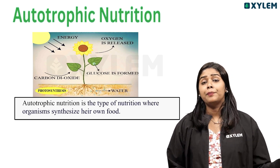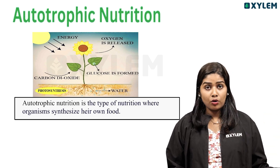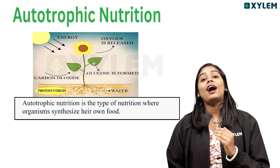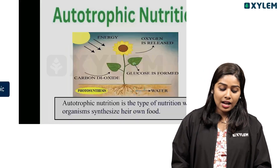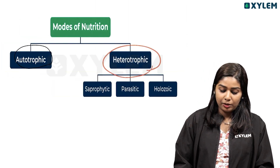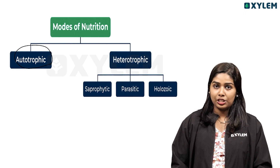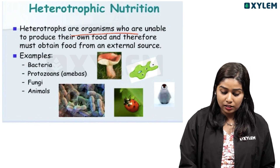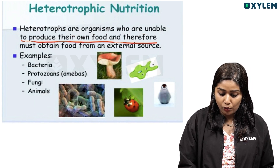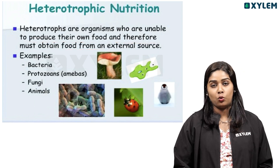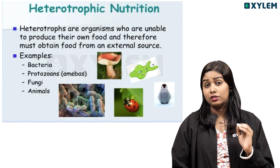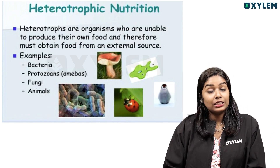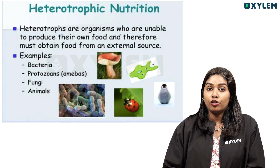There are certain types of organisms, and also certain types of plants, which are dependent on other organisms or other plants for their nutrition. What do you mean by heterotrophic nutrition? Heterotrophs are organisms who are unable to produce their own food and therefore must obtain food from an external source. They depend on other organisms — we human beings are examples of heterotrophic organisms. There are also some plants that are heterotrophic.